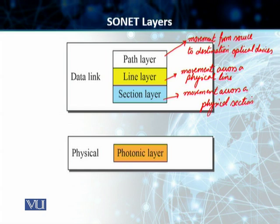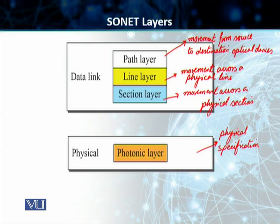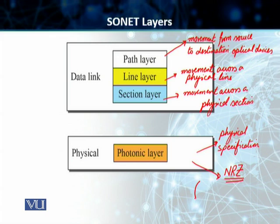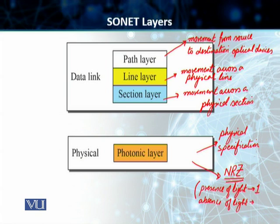Lastly, we have the photonic layer, which is equivalent to our physical layer. It includes physical specifications for the optical fiber channel, corresponding to the physical layer of the OSI model or TCP/IP model. SONET uses NRZ encoding. Since we are dealing with fiber optics and light rather than electrical signals, the presence of light represents a binary 1, and the absence of light represents a binary 0 in NRZ encoding.